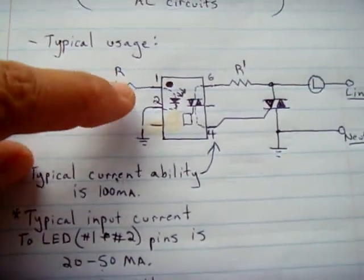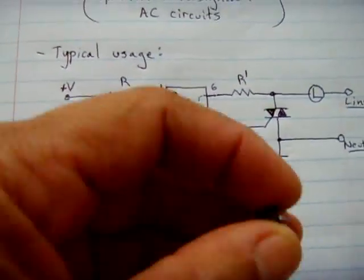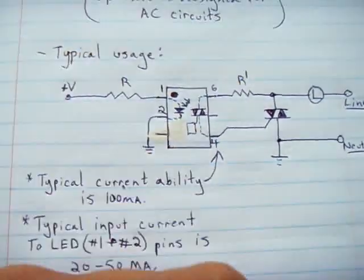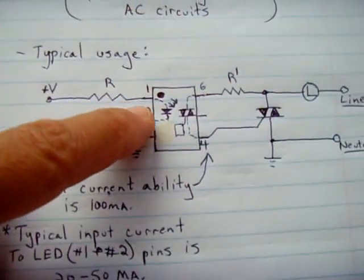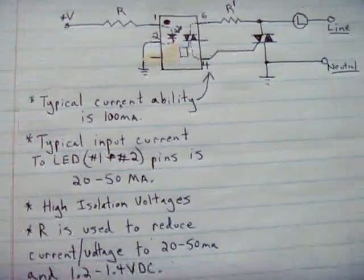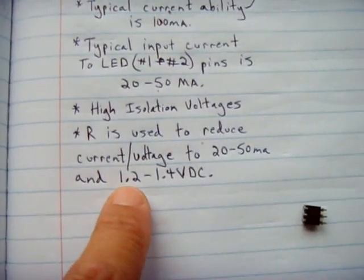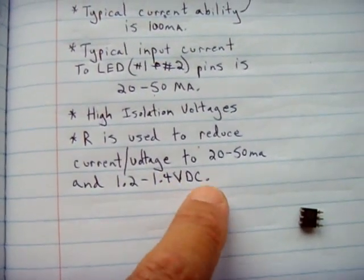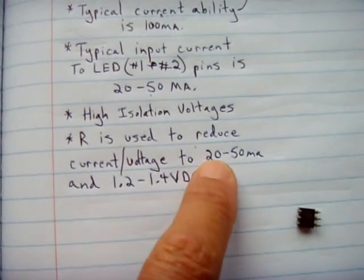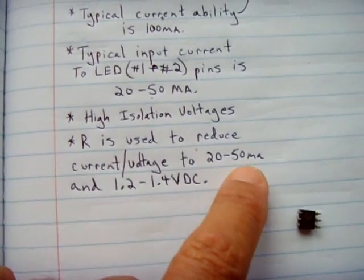Now how it works is just like the other one. There's an LED inside this chip. What it does is require between 1.2 and 1.4 volts DC on average and anywhere from 20 to 50 milliamps of current.